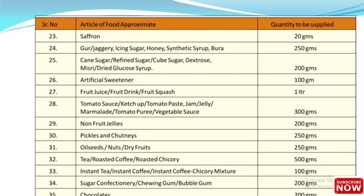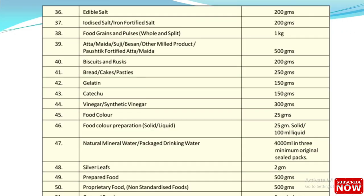Continuing the sample quantity table: pickles and chutneys 250 g; oil seeds, nuts, dry fruits 250 g; tea, roasted coffee, roasted chicory 500 g; instant tea, instant coffee, chicory mixture 100 g; sugar confectionery, chewing gum, bubble gum 200 g; chocolates 200 g; edible salt 200 g; food grains and pulses 1 kg; maida, suji, besan and other milled products 500 g; biscuits and rusk 200 g; bread, cake, pastries 250 g; gelatin 150 g; vinegar 300 g; food color 25 g; natural mineral water or packaged drinking water 4000 ml in 3 minimum original sealed packs; silver leaf 2 g; prepared food 500 g; proprietary food 500 g; canned food: 6 sealed cans to be sent for analysis.